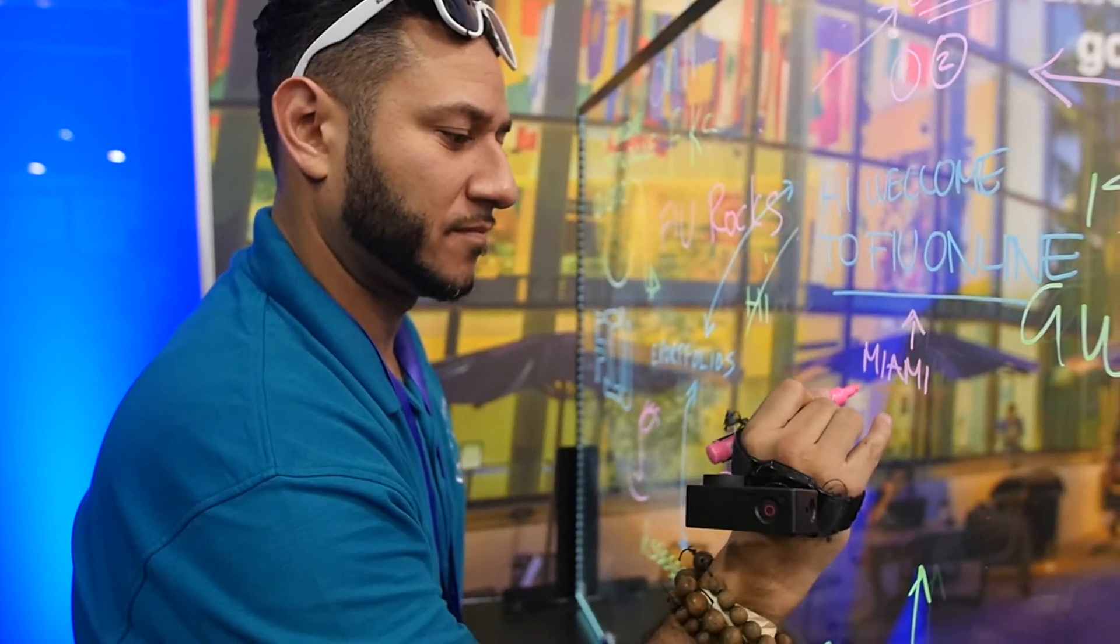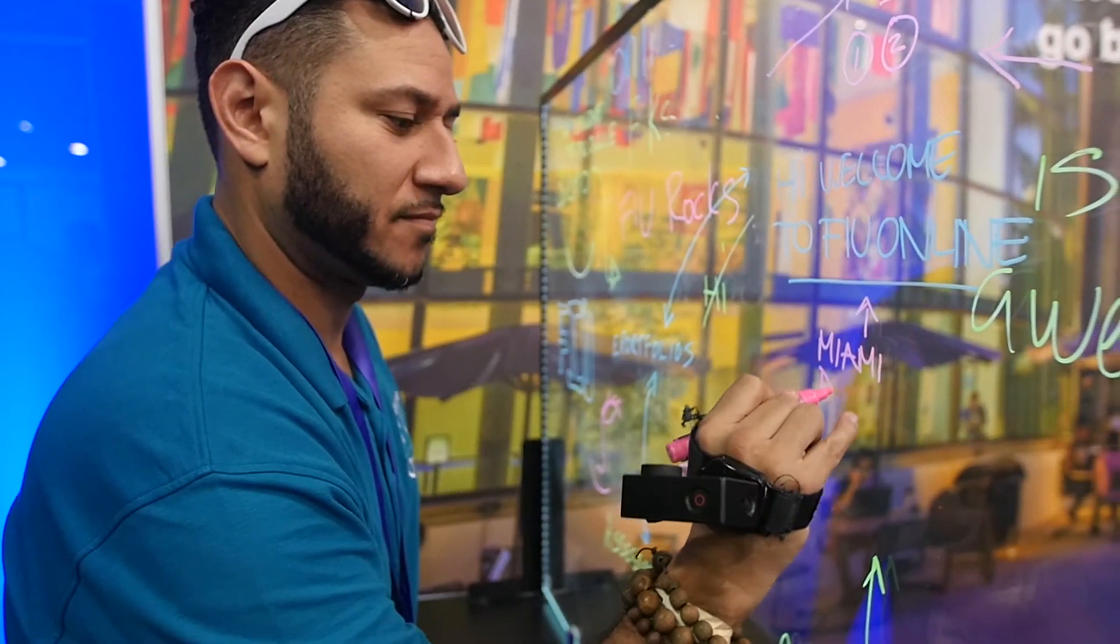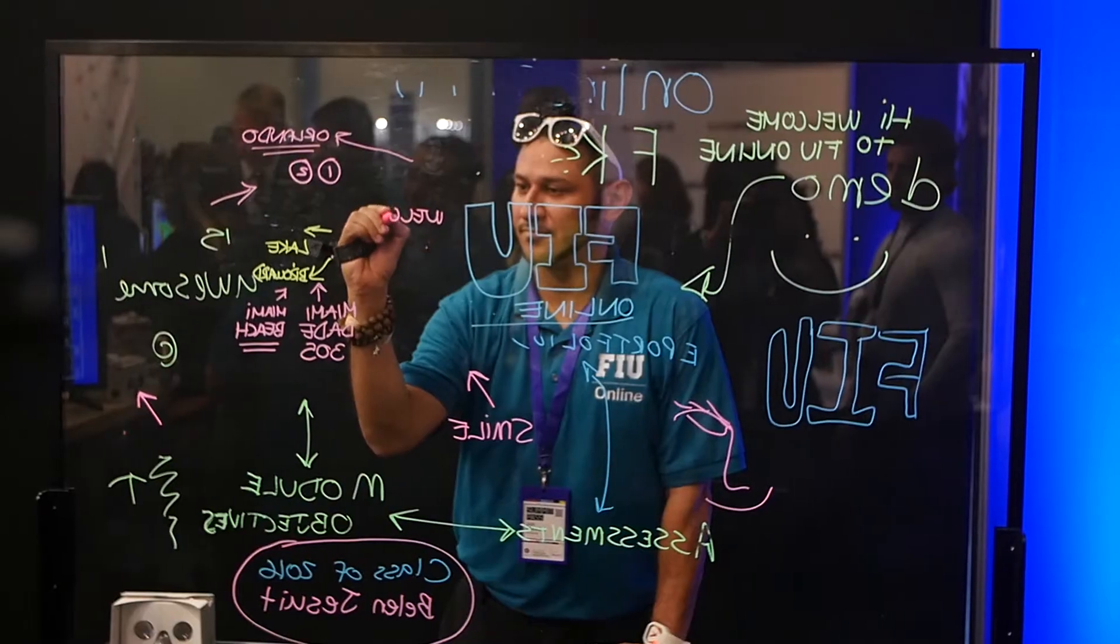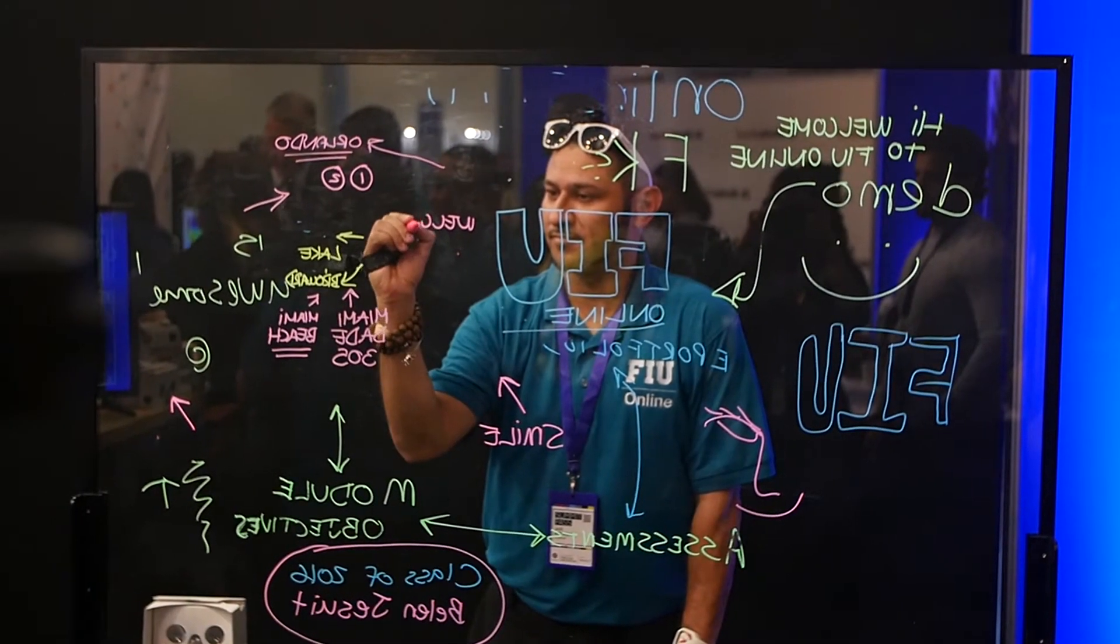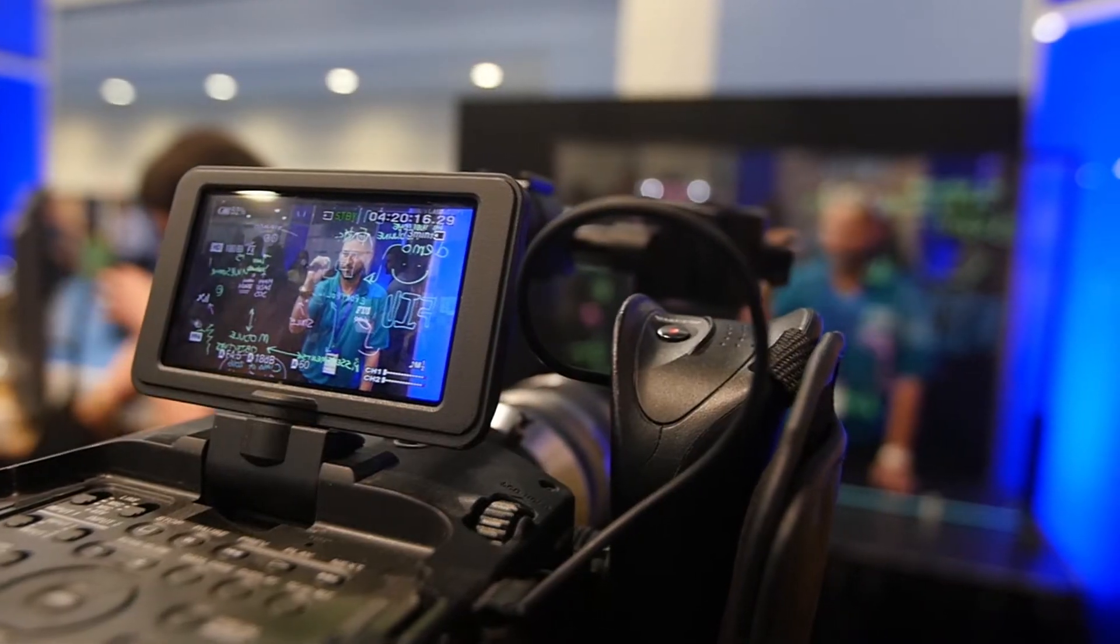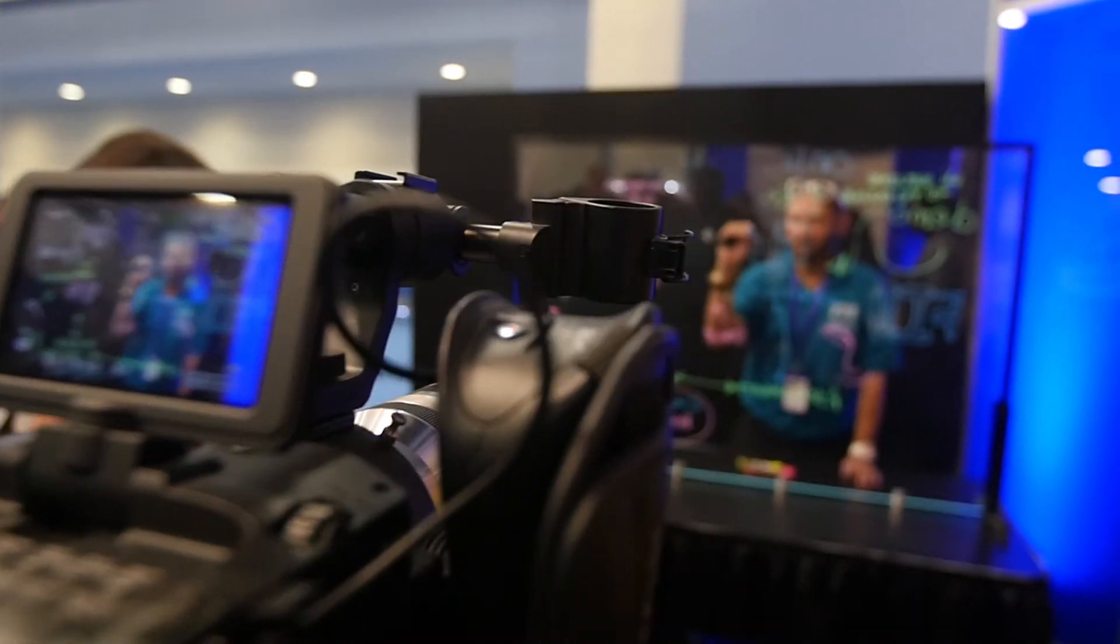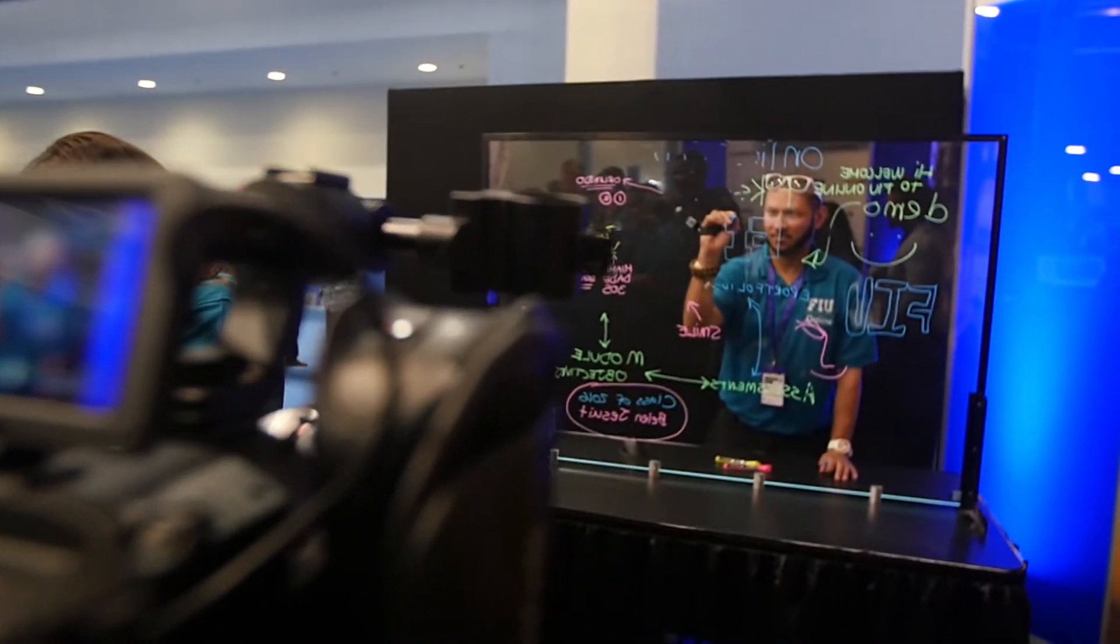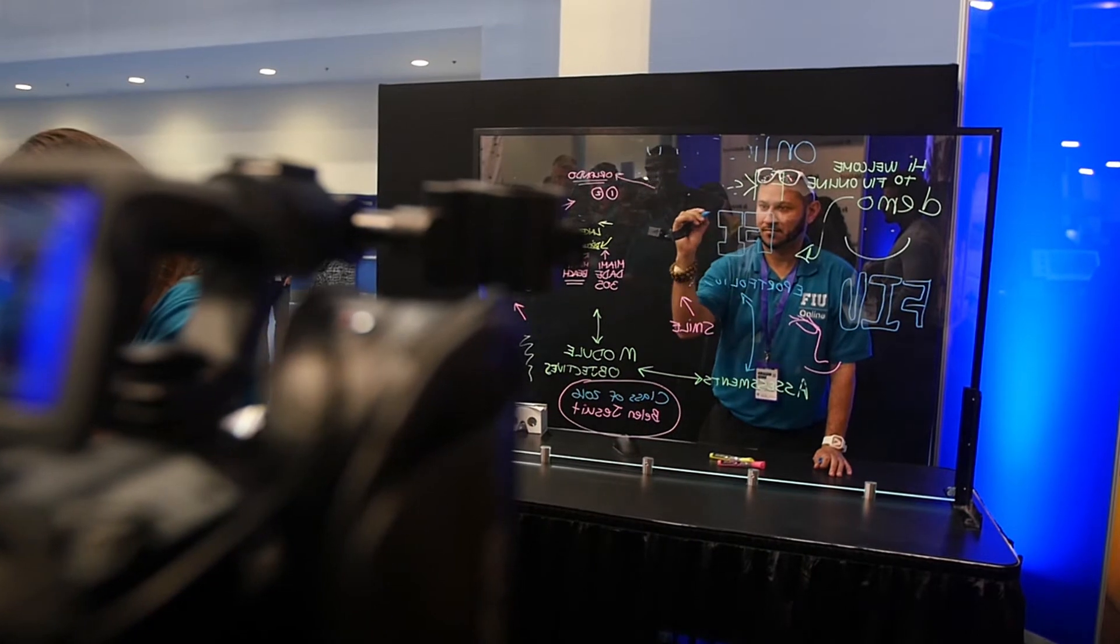So what we did instead is swap the board to a glass. What's going on here is that the professor is still writing from left to right, but the camera is capturing the information, and we're inverting the projection of what's being captured and then inputting it into a TriCaster.